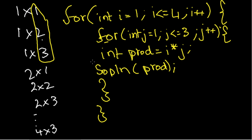This i loop will not be increased — it won't go into its next iteration — until the whole j loop has run. What that means is: j is 1, it comes down, prints 1, goes back up. i is still 1, j becomes 2, 1×2 equals 2, comes here, prints 2.